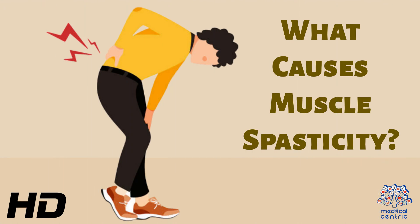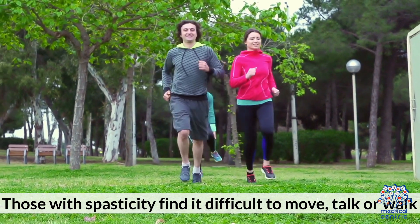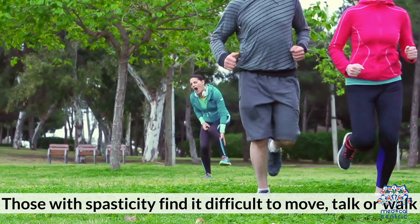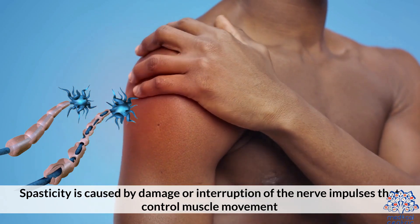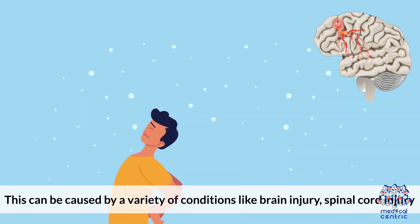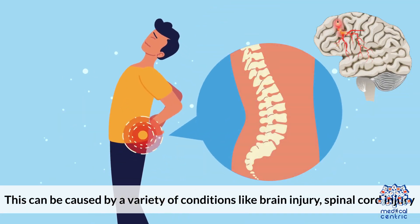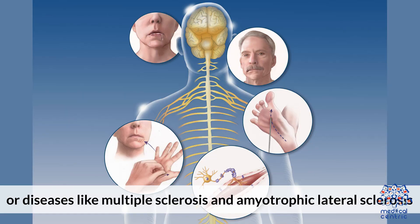Today's video topic is: What Causes Muscle Spasticity? Those with spasticity find it difficult to move, talk, or walk. Spasticity is caused by damage or interruption of the nerve impulses that control muscle movement. This can be caused by a variety of conditions like brain injury, spinal cord injury, or diseases like multiple sclerosis and amyotrophic lateral sclerosis.